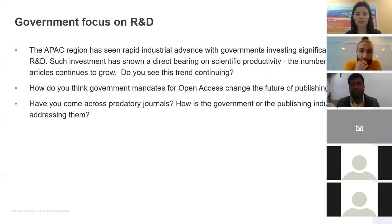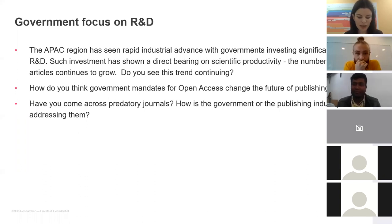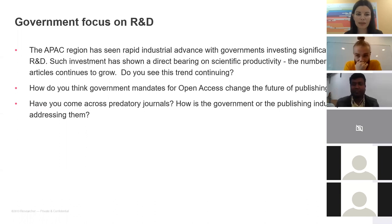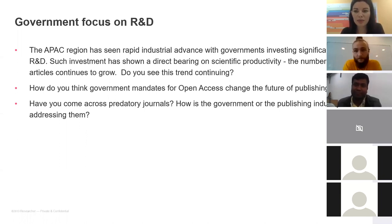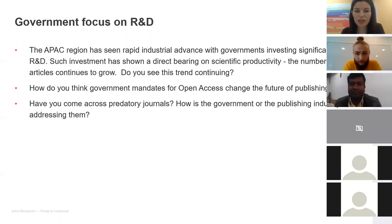In some countries open access is influenced by government focus on research and development. In India and China, for example, there is a huge focus on academic output, which has resulted in enormous growth in scientific productivity. There is so much research being published across Asia. Do you see these trends continuing? Shall we start with Faye?